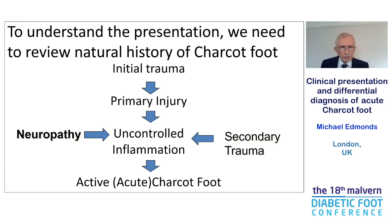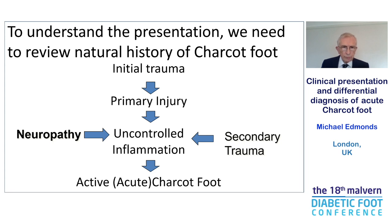To understand the presentation, we need to review the natural history of the Charcot foot. Initially, there's a trauma, probably mild, which leads to the primary injury, and this results in uncontrolled inflammation for two reasons. One, the presence of neuropathy. We need our nerves to control inflammation, to turn it on and to turn it off. In neuropathy, we get uncontrolled inflammation.